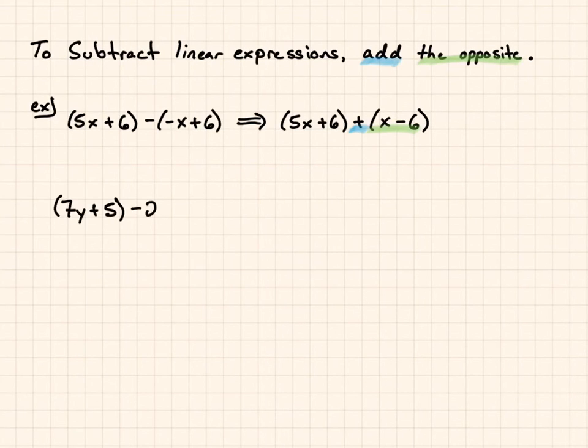Another example, if I had (7y + 5) - 2 times the quantity (4y - 3), I'm going to have 7y plus 5 plus, and the opposite of positive 2 here is negative 2. I'm going to be multiplying negative 2 times what's inside these parentheses. Please let me know if you have any questions. Be kind to yourself and be kind to others.